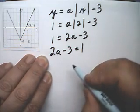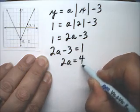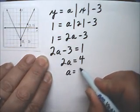Just switching them. So now I end up with 2a equals 4, adding 3 to both sides, and a is equal to 2.